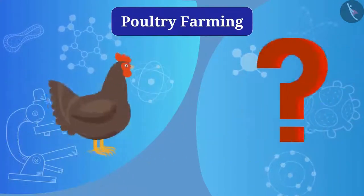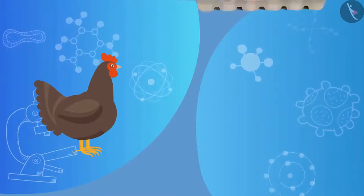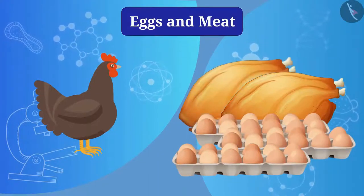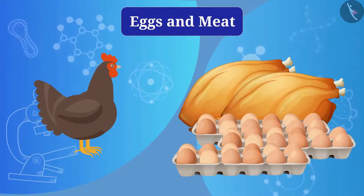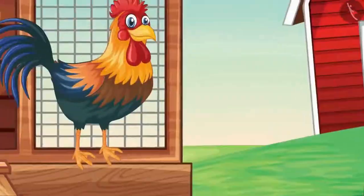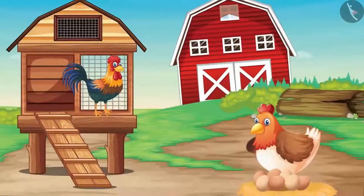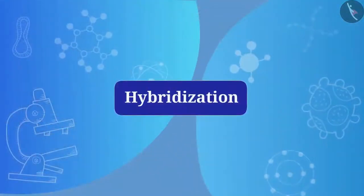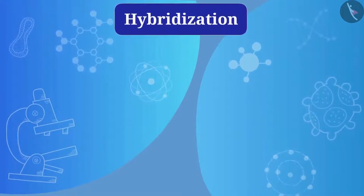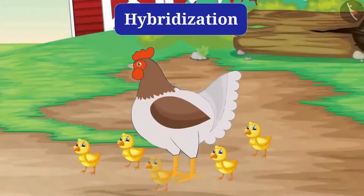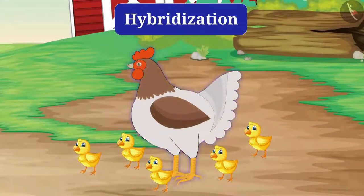We get eggs and meat from chicken, and to increase the amount of eggs and meat, chickens should be taken care of — this is called poultry farming. The egg-laying hen is called a layer, and the meat-giving hen is called a broiler. Hybridization is also possible in chickens. For example, hybridization is done between local and foreign breeds like Leghorns to obtain desired properties such as higher numbers and good quality of chickens, tolerance to high temperatures, and reduction in size of egg-laying birds.